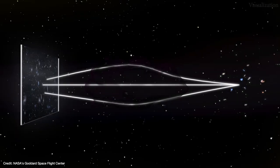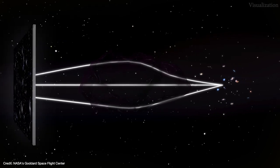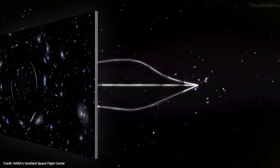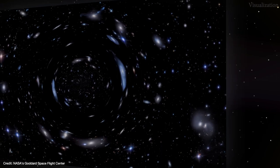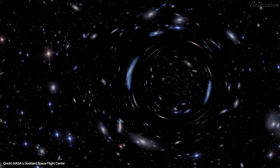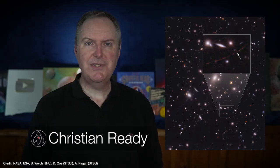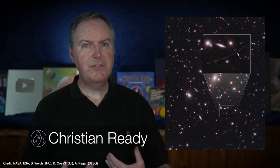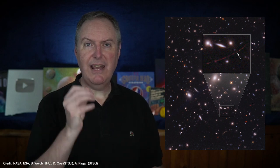Gravitational lenses allow us to glimpse objects that are otherwise much too far and too faint to be detected. In this case, the star was found in a galaxy that existed when the universe was less than a billion years old. Gravitational lenses have revealed galaxies that are much further back in time, but this is the earliest epoch of the universe that we've ever seen a single star.